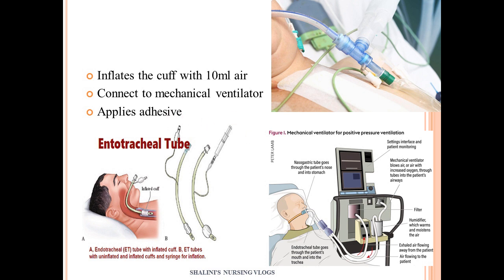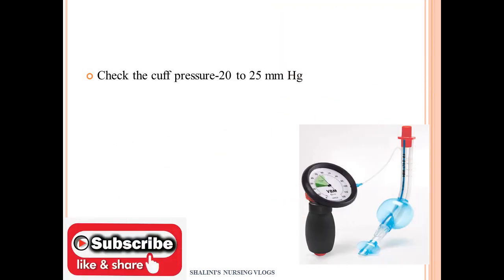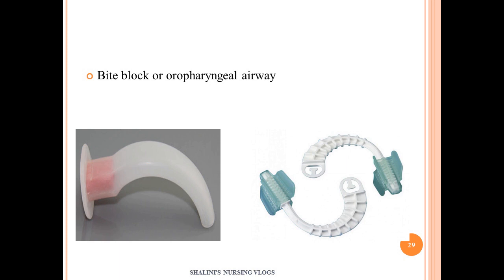Once the patient is connected to the ventilator, immediately check the cuff pressure using a cuff manometer. Maintain cuff pressure between 20–25 mmHg: over-inflation can cause tracheal necrosis and irritation, while under-inflation risks tube dislodgement. Apply the adhesive to secure the tube. To prevent airway obstruction from biting, insert an oropharyngeal airway or a bite block.